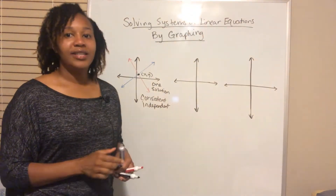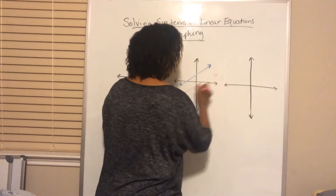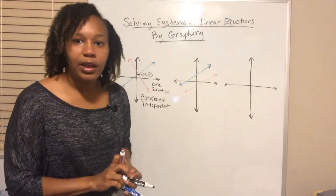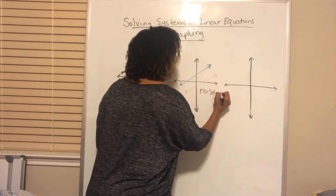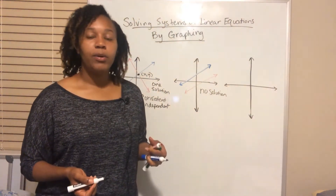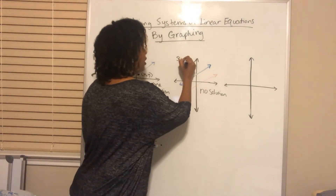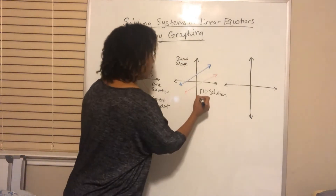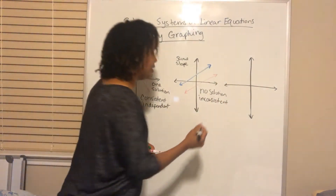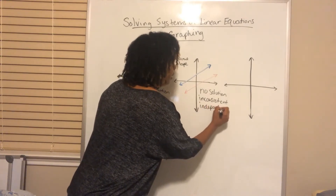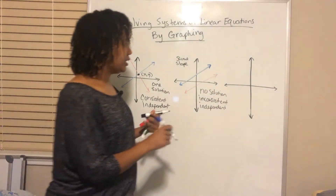The second scenario is the two lines can be parallel to each other, meaning they never intersect. If the lines are parallel they will never cross, so there is no point they share — meaning there is no solution. Lines are parallel when they have the same slope. This is called an inconsistent system — inconsistent means there is no solution. The lines are also independent of each other.